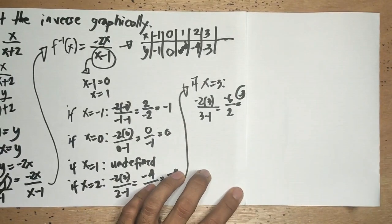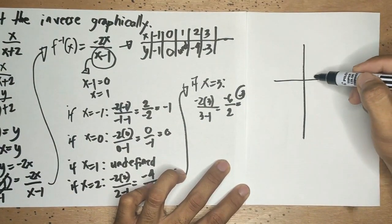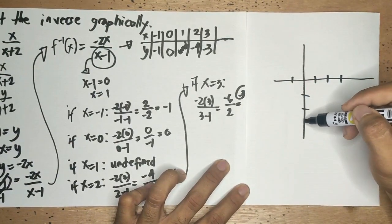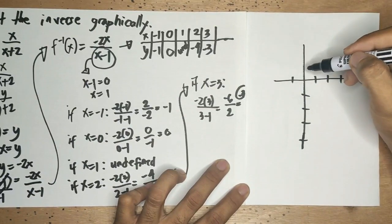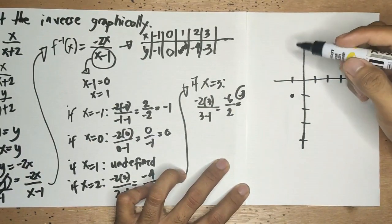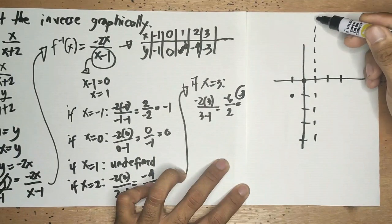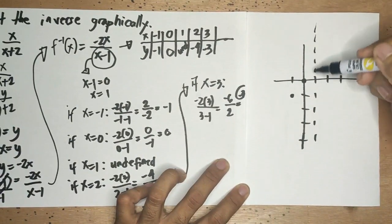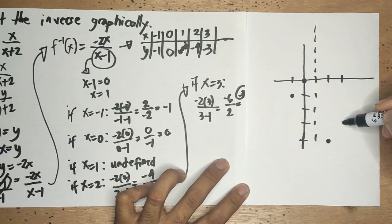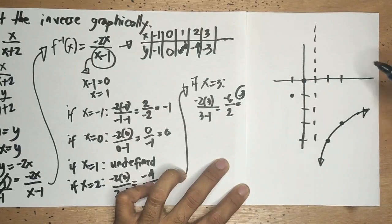Next step: we plot these coordinates on the Cartesian plane. Plotting the points: (−1, −1), (0, 0), and then the vertical asymptote at x = 1 is drawn as an imaginary line. Then (2, −4) and (3, −3) are plotted. We connect the points on each side of the asymptote to form the graph of the inverse function.